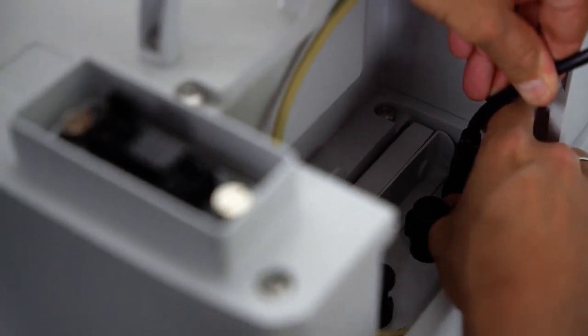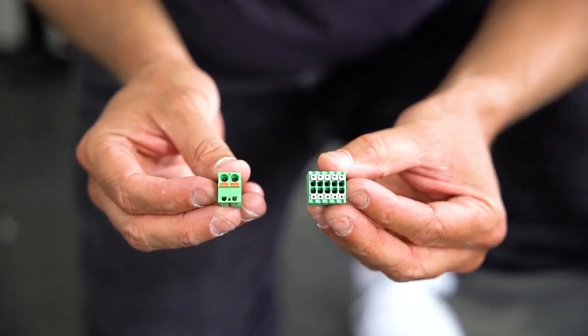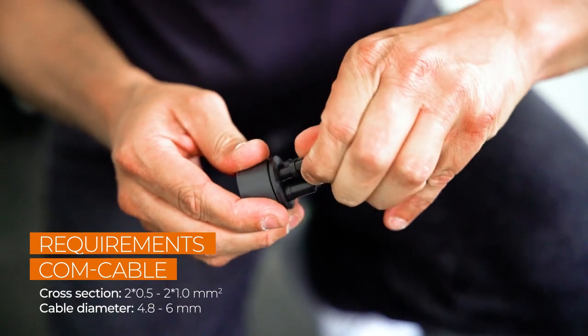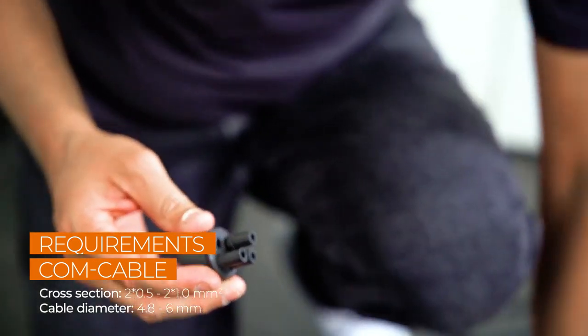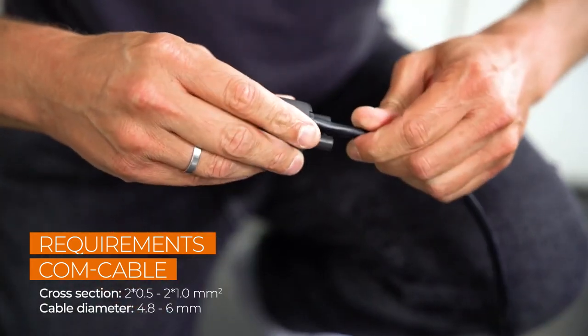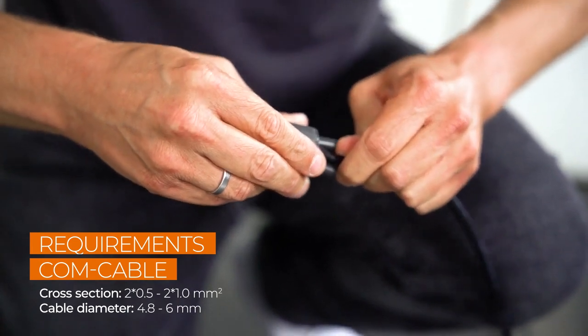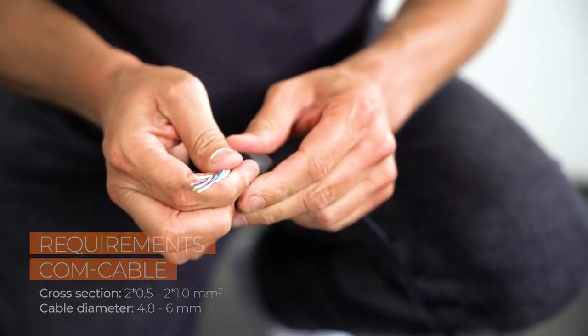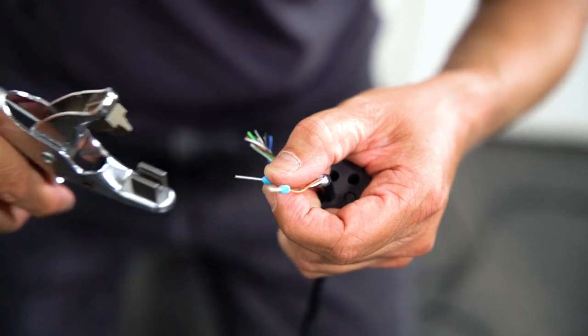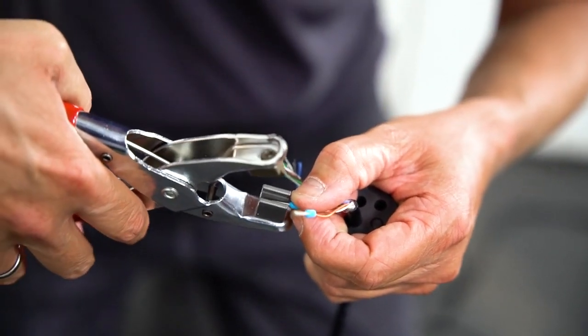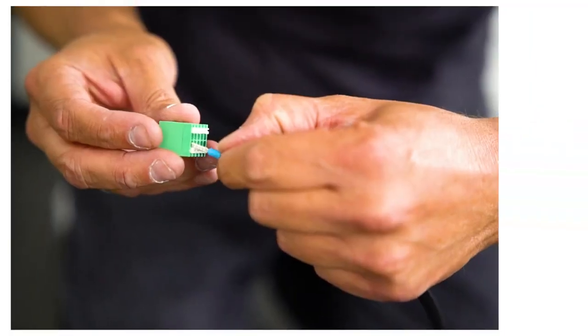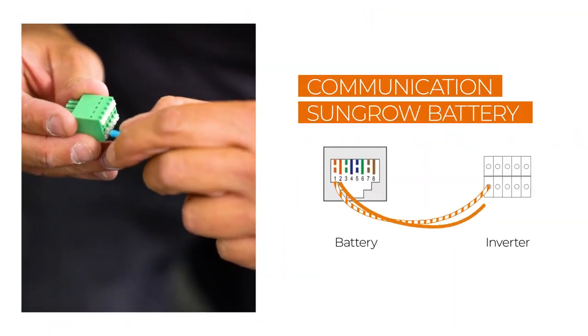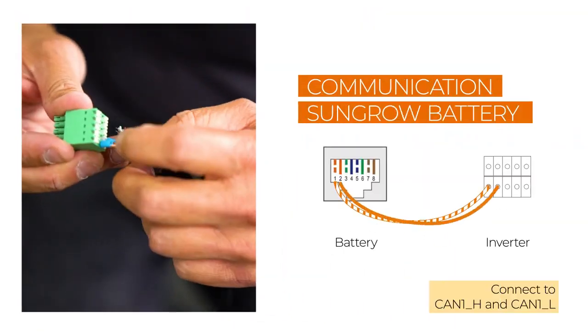You can also connect the battery via the communication port. Remove approximately 4-5 cm of the cable sheath of the communication cables. Then strip approximately 5-7 mm of the inner cables. If necessary, you may have to fit the cables with end sleeves before you push them into the plug. The SunGrow battery is connected to the CAN interface.